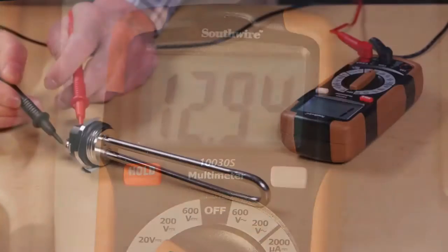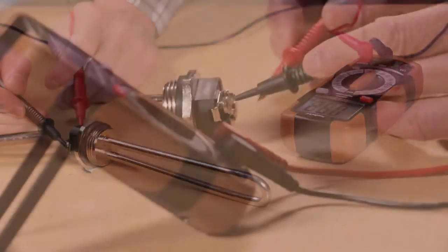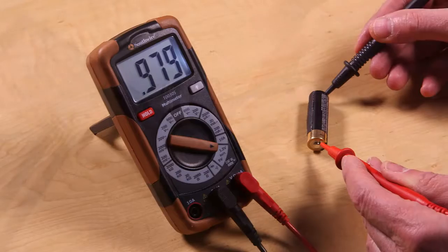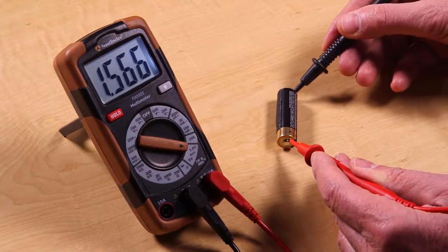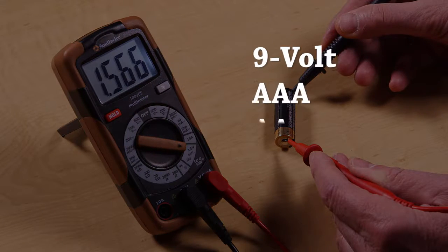It also measures resistance for checking heating elements, motor windings, and electrical connections. Special ranges are included for testing 9V, AAA, AA, C and D type batteries.